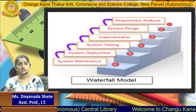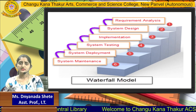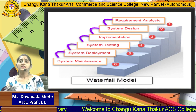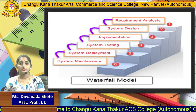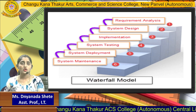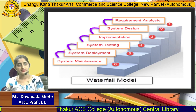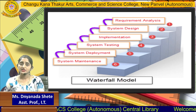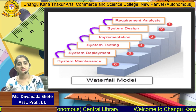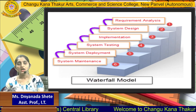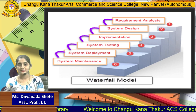The fourth phase is system testing. After completing implementation, the system testing part begins. Testing means checking the code from time to time — whether it is correct, whether errors or bugs are present, and whether the customer's needs are fulfilled. All these things are covered in the system testing phase.